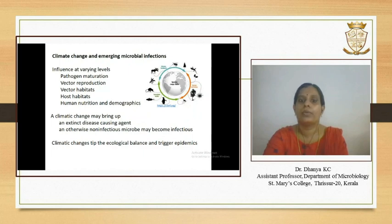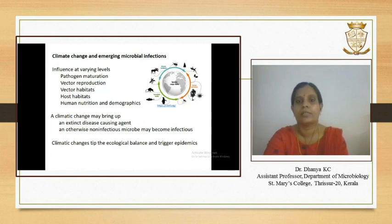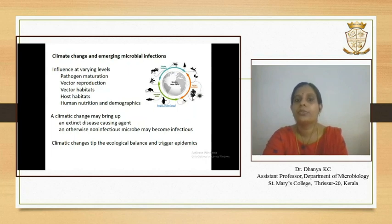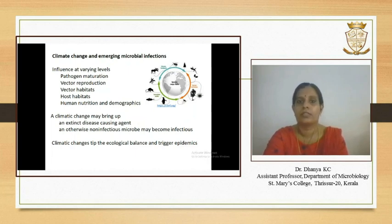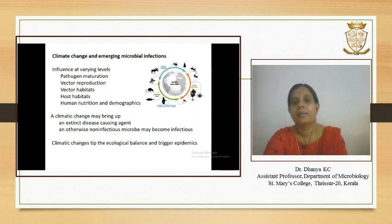Climatic factors influence the emergence and re-emergence of infectious diseases at various levels — from directly affecting pathogen maturation and vector reproduction, to altering vector or host habitats, and altering human nutrition. A climatic change may either bring up an extinct disease-causing agent or cause an otherwise non-infectious microbe to become infectious. In other words, climatic changes tip the ecological balance and may trigger epidemics.